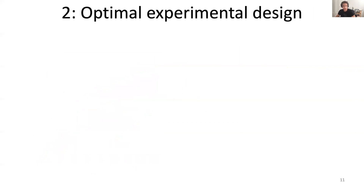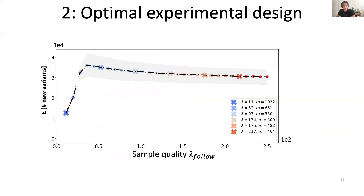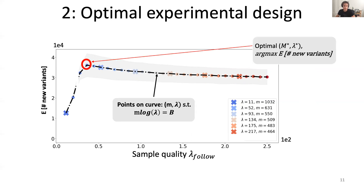We now show how we can use these predictions under changing conditions to inform optimal experimental design of a follow-up study. On the y-axis we show the expected number of new variants as we vary the sample quality lambda-follow. Points on the curve show feasible combinations of number of samples and sequencing depth given a budget and cost function, and we see a clear trend: if we specify a very small sequencing depth we can sample many more observations, but the noise won't let us reveal many new variants. The usefulness keeps increasing until we hit a maximum or elbow, after which increasing the depth is not beneficial. Our method can inform the optimal choice of sampling parameters and in turn help maximize the usefulness of the study.